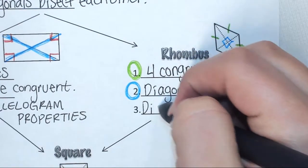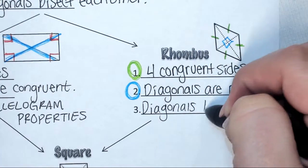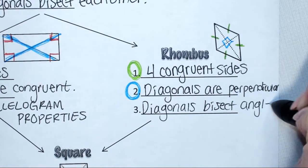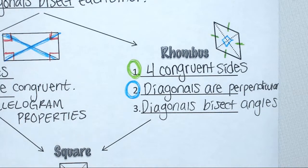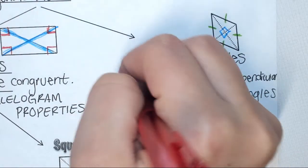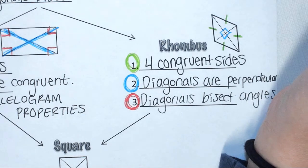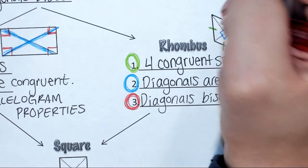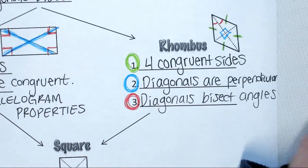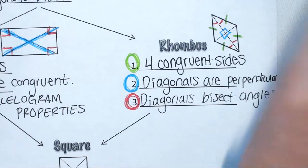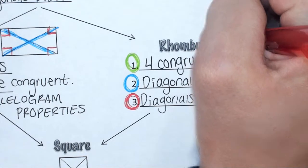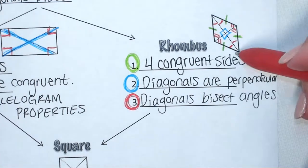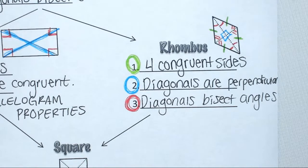Your last property is that your diagonals bisect the angles. What does it mean to bisect? Not just cross, but when they cross, they split the angle in half. Grab your last color and circle number three in that color. How do you show that angles are congruent? The arcs. So I would say these two angles are congruent, these two angles are congruent, these two angles are congruent, and these two angles are congruent. Every single angle got split in half by those diagonals.